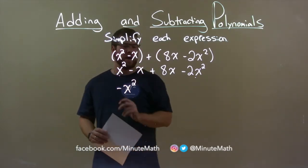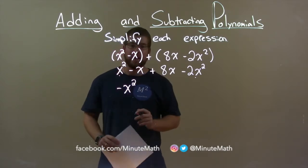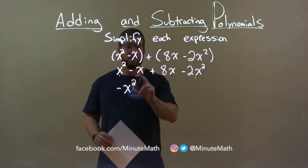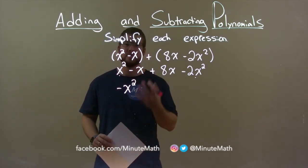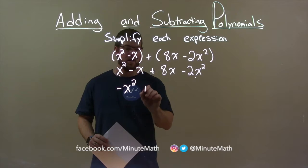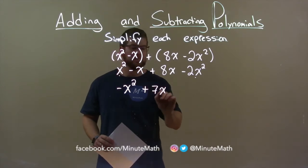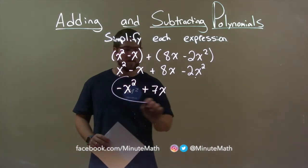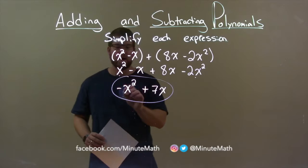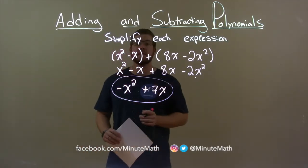Now we have to deal with the x's. We have a minus x and an 8x. Well, minus x plus 8x is 7x. So we have plus 7x, and there we have it. Our final answer: minus x squared plus 7x.